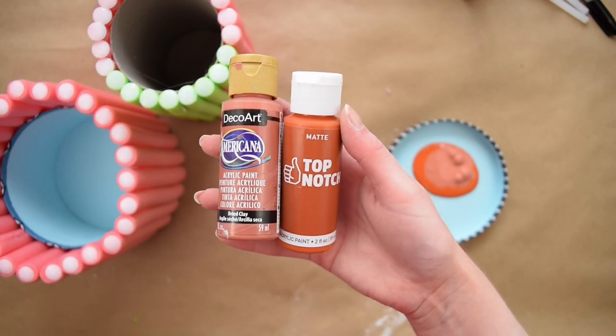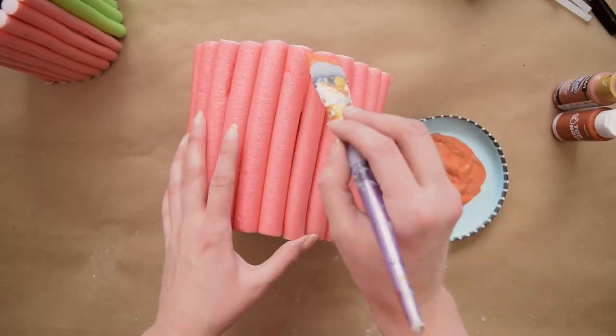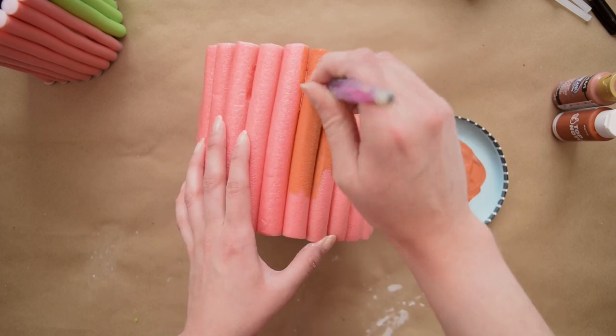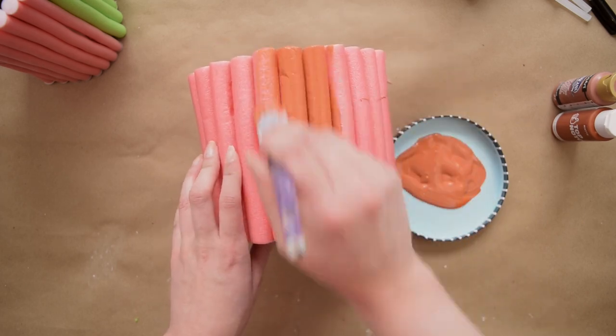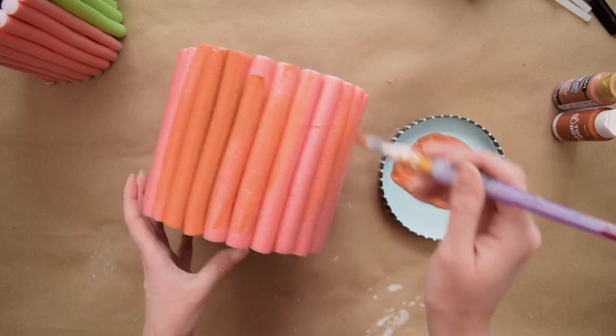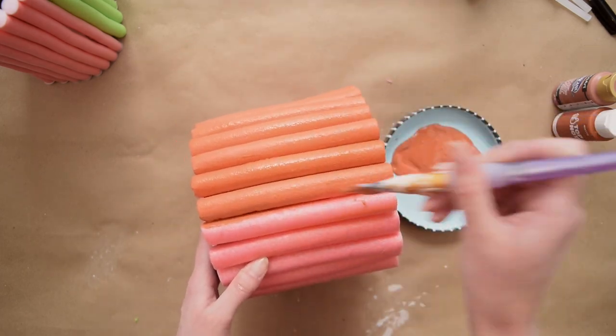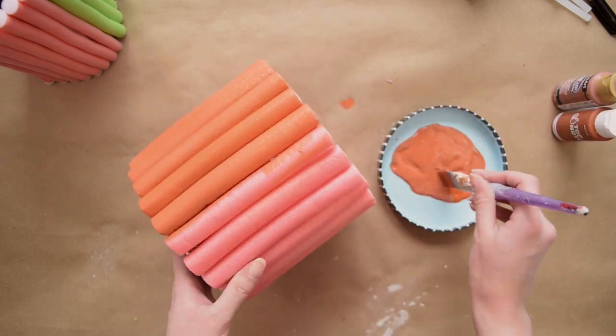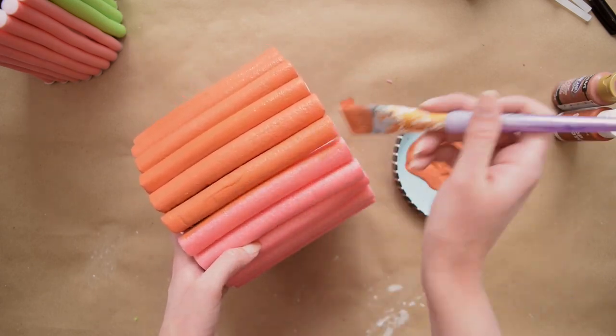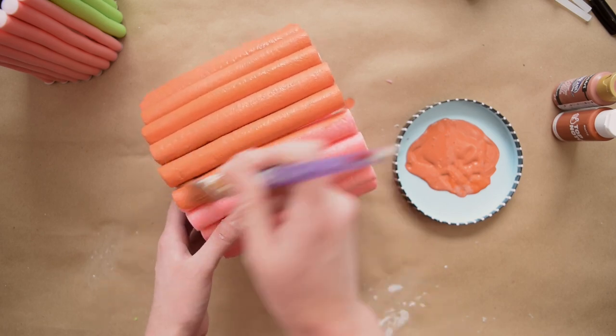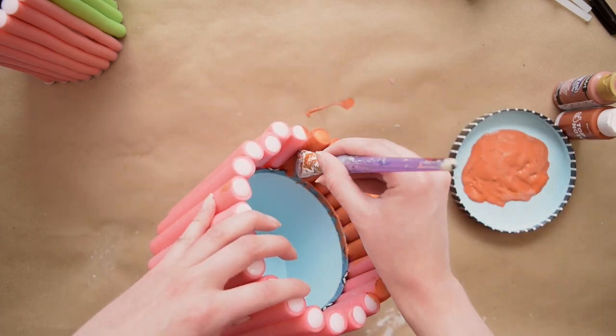To paint the larger planter I'm mixing a terracotta and burnt orange color together and just painting on the rollers. It was very very simple. I found that this color really covered the rollers well. I ended up doing two coats of paint just to make sure I got into all the little crevices and everything looked nice and consistent.